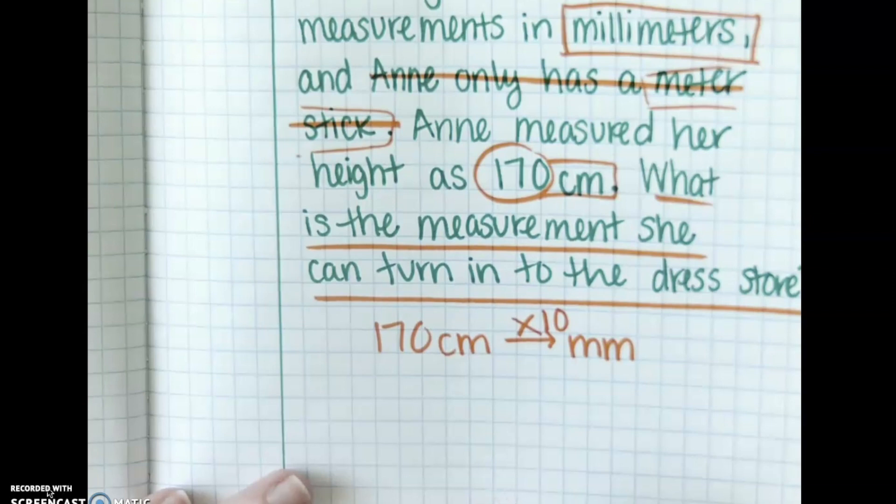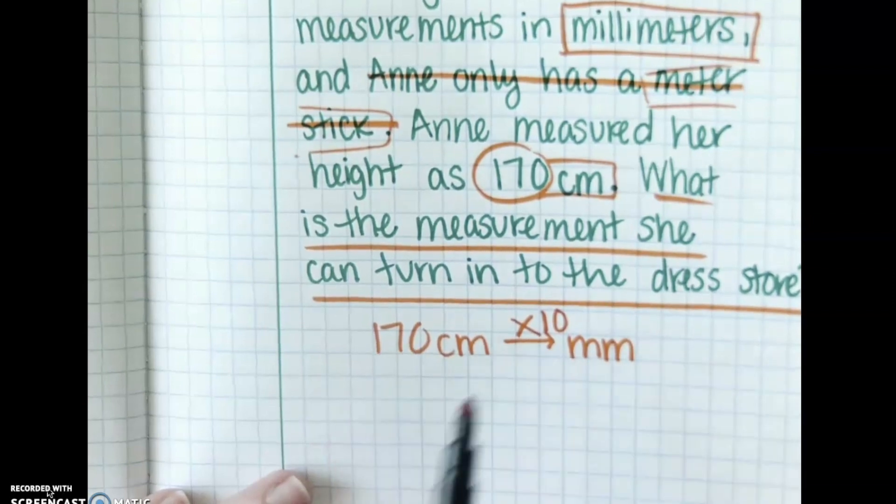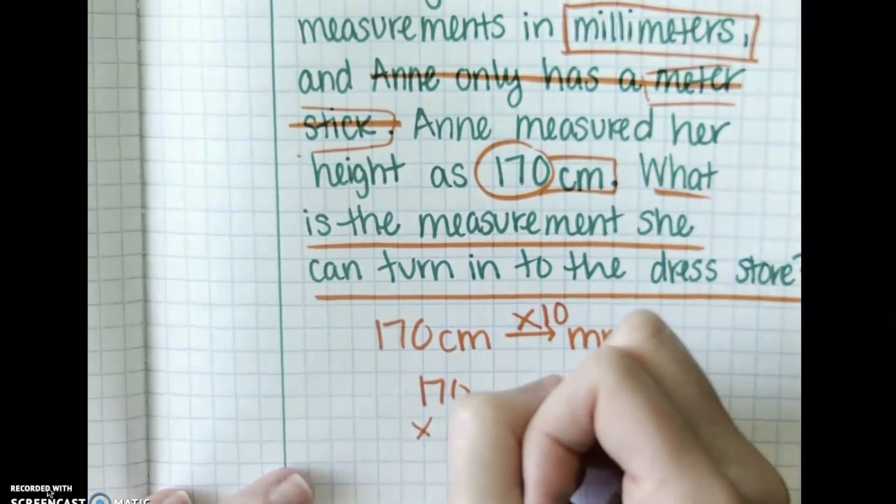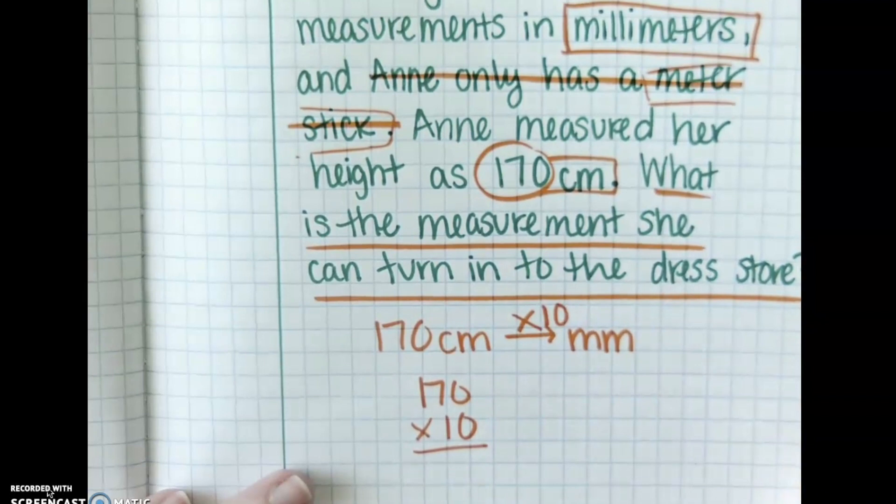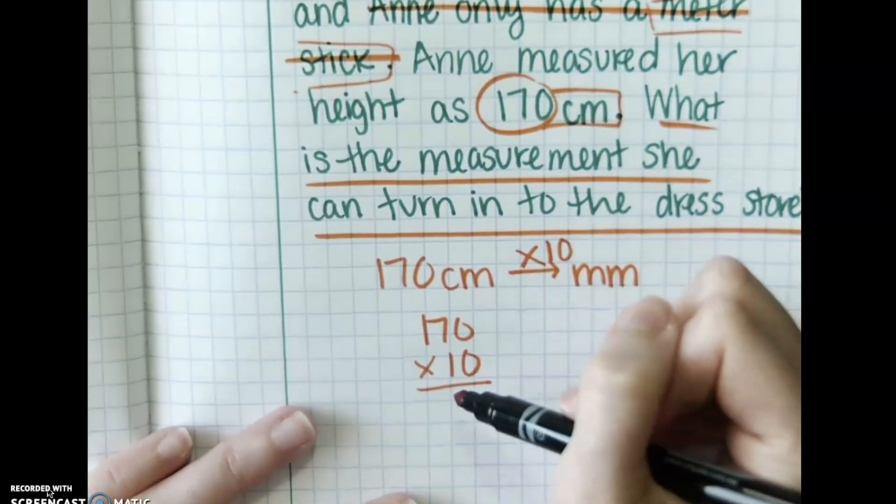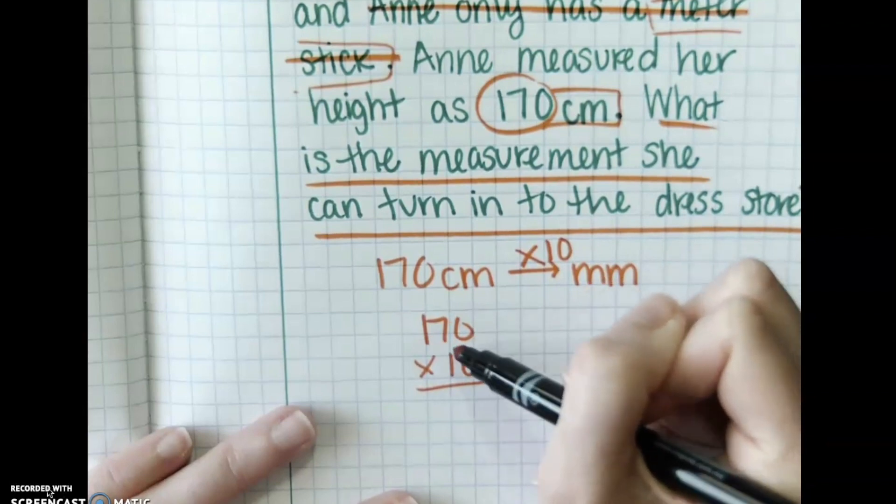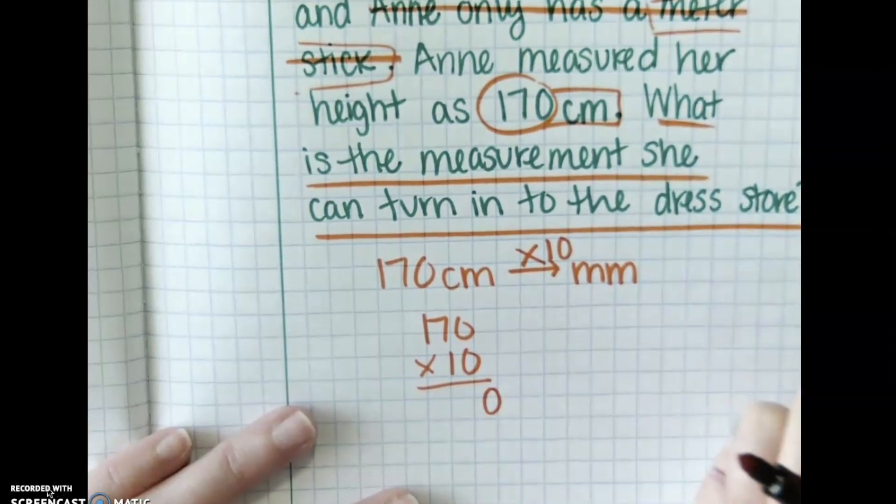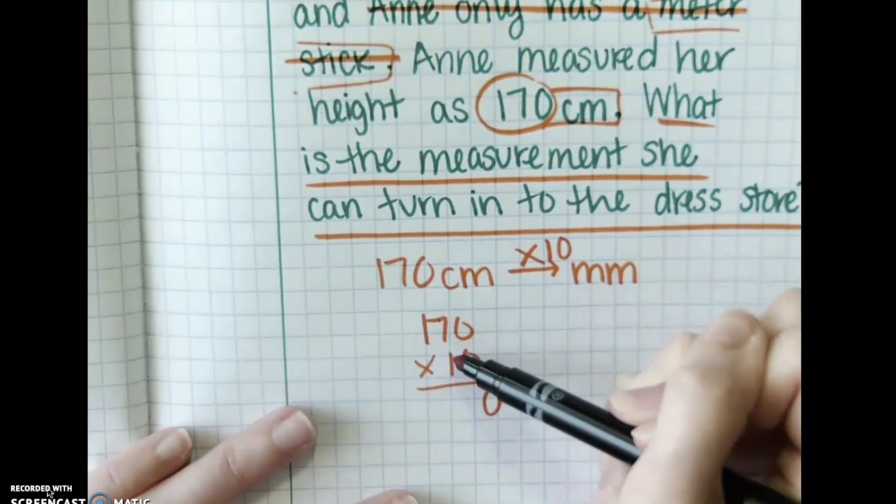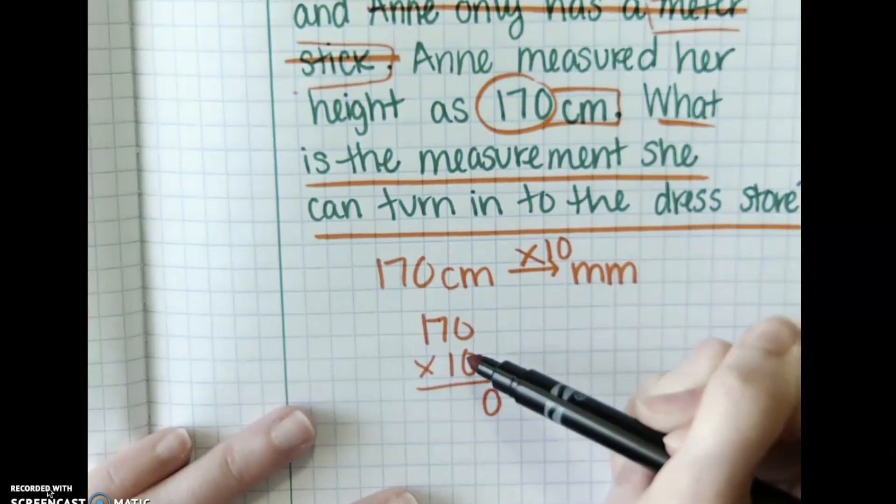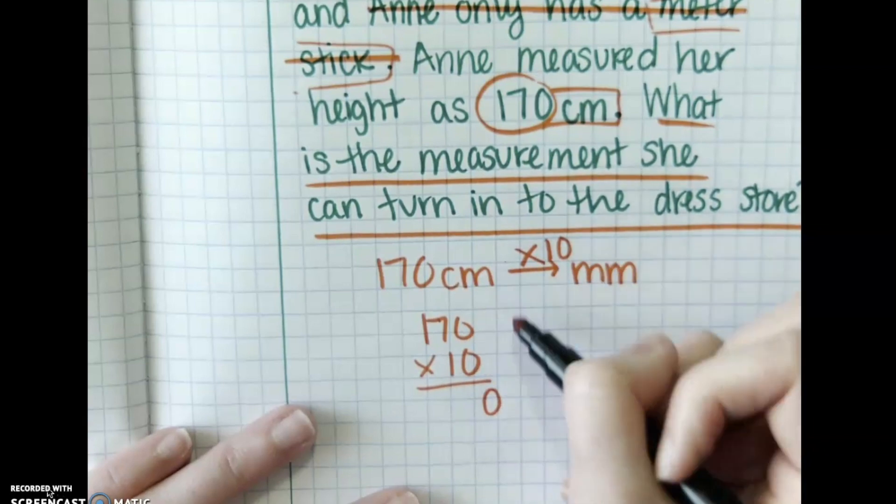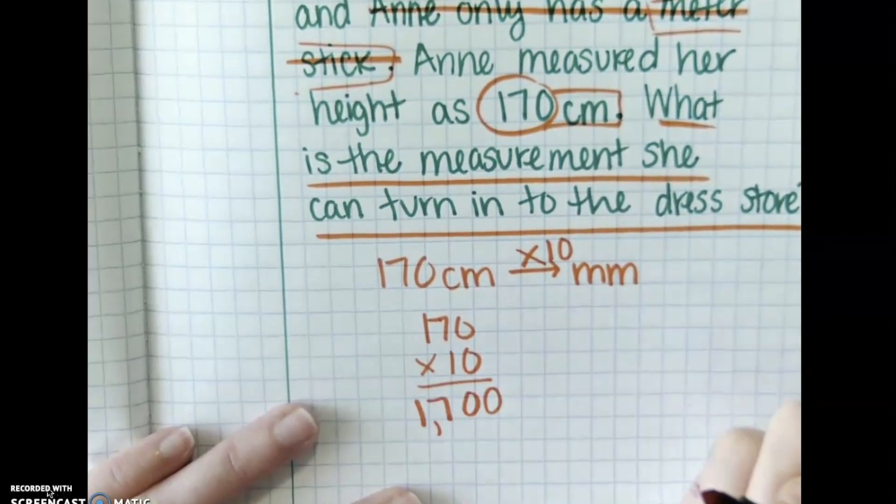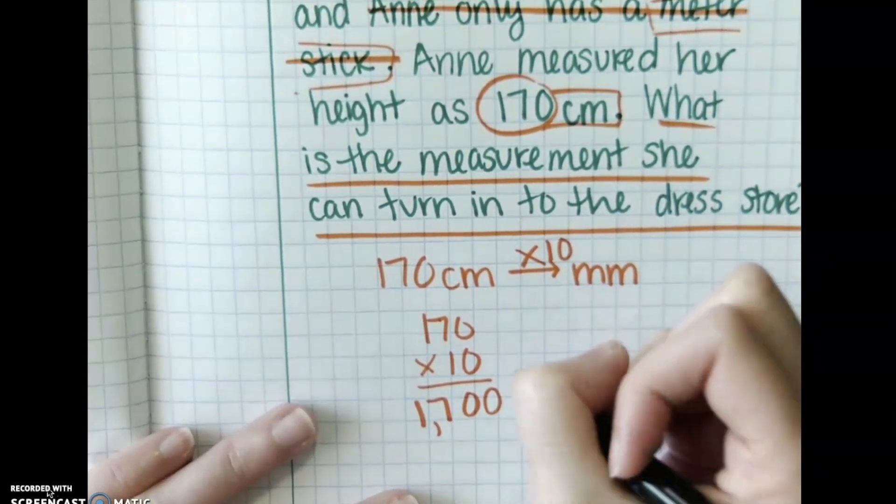So this is a way of doing it where I'm skipping that tic-tac-toe table. I'm just going straight to the multiplication. So 170 multiplied by 10. Now we could do it the long way where we multiply this whole thing out. 0 times 0, 0 times 7, 0 times 1. Or I could say hey this is a 10. I'm going to tack the 0 on. And then I'm going to multiply by 1 for each of these. That only works for 10s. It does not work if there's an actual whole number here. So 1 times 0 is 0, 1 times 7 is 7, 1 times 1 is 1. So my answer would be 1,700 millimeters.